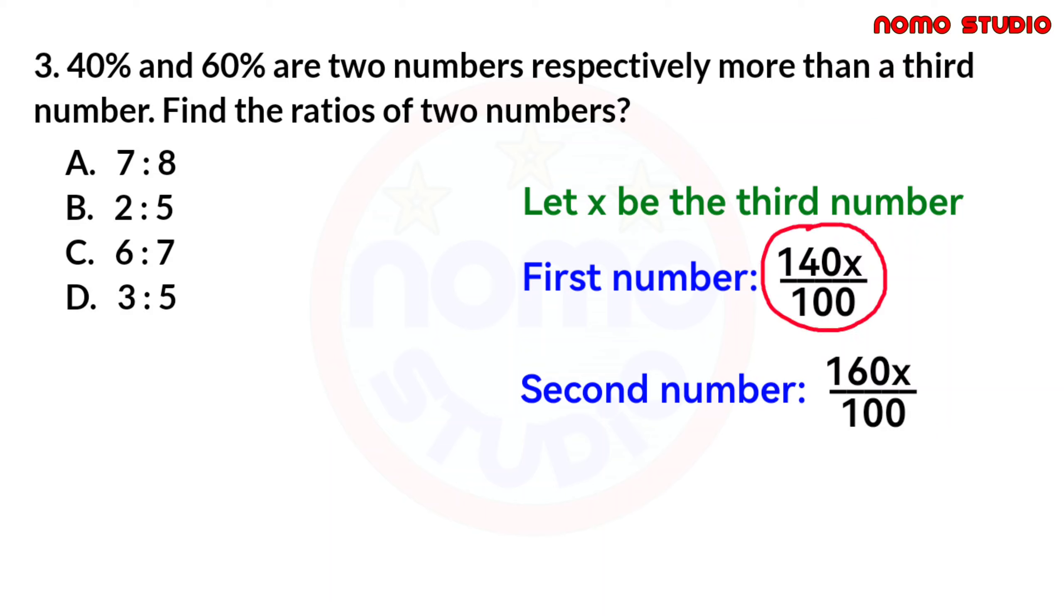Now, let's just simplify this one. As we can see, both are divisible by 20. 140 can be divided by 20 and at the same time, 100 can be divided by 20. Now, 140 divided by 20 equals 7, but there's still x, so we write x. Here, 100 divided by 20 equals 5. So, the simplified form of 140x over 100 is just 7x over 5. Now, for the second number,